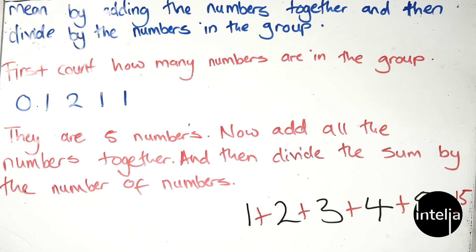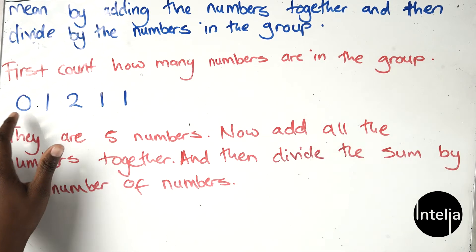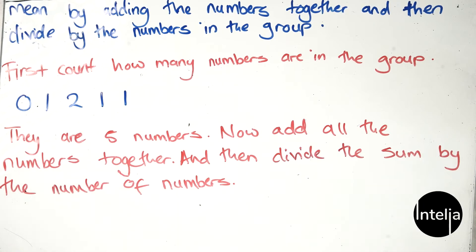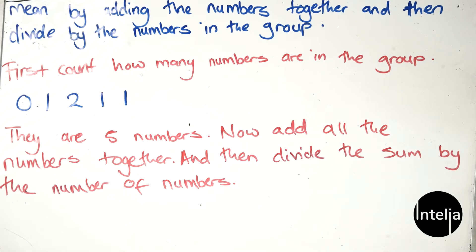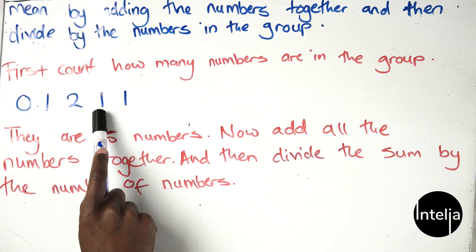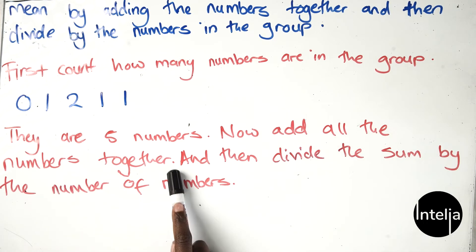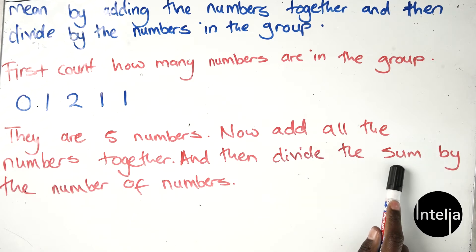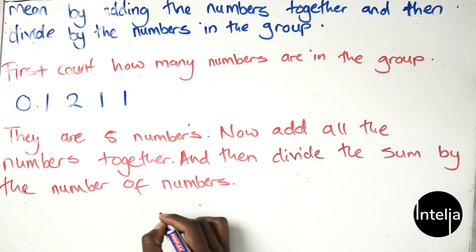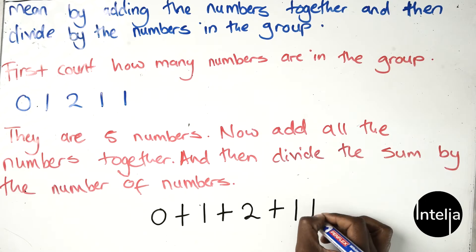Now here I have an example. First, count how many numbers are in the group. I have zero, one, two, one, one. How many numbers do we have? One, two, three, four, five - there are five numbers. Now add all the numbers together and then divide by the number of numbers.